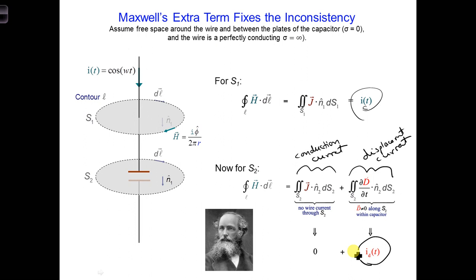In other words, both conduction current, resulting from the electrons flowing in the conductor or in a conductive material, can generate magnetic fields, and also displacement current, resulting from time-changing electric fields, because D is equal to epsilon E, can also generate magnetic fields.